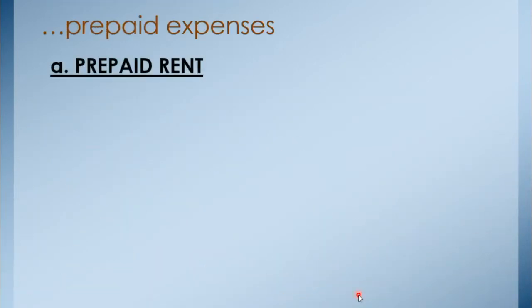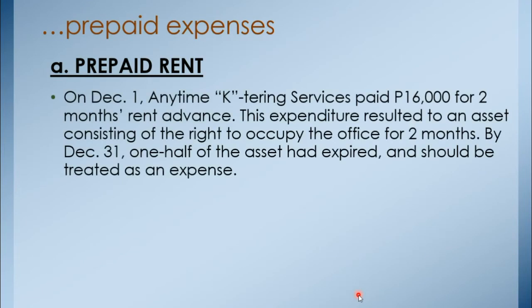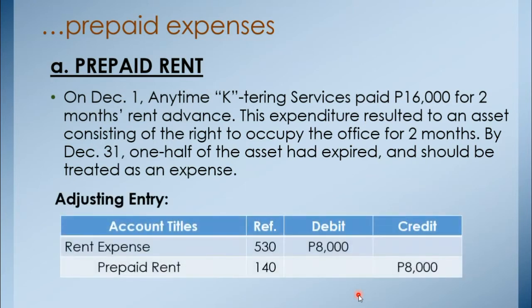The first prepaid expense example is prepaid rent. On December 1, Anytime Catering Services paid P16,000 for two months' rent in advance. By December 31, one-half of the asset had expired and should be treated as an expense. The journal entry for December 1: Debit prepaid rent P16,000, Credit cash P16,000. The adjusting entry: Debit rent expense P8,000, Credit prepaid rent P8,000. The rent expense increases while prepaid rent decreases.